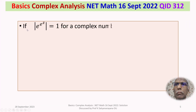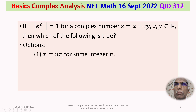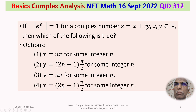The given question is: if |e^(e^z)| = 1 for a complex number z = x + iy where x, y belong to the set of real numbers, then which of the following is true? Option 1: x = nπ for some integer n. Option 2: y = (2n+1)·π/2 for some integer n. Option 3: y = nπ for some integer n. Option 4: x = (2n+1)·π/2 for some integer n.